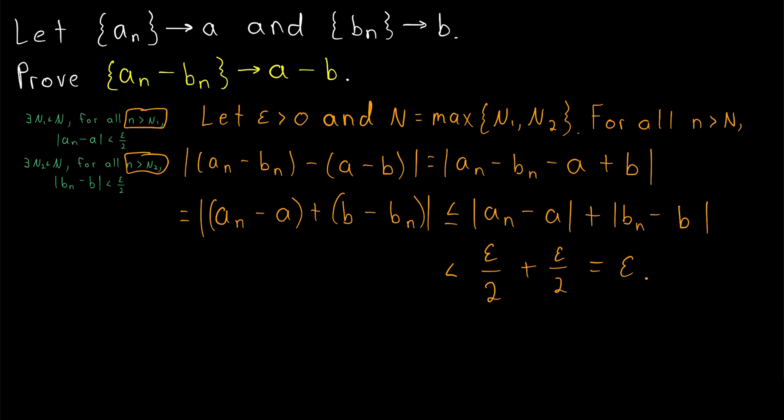Thus, if an is a sequence converging to a and bn is a sequence converging to b, the sequence an minus bn converges to a minus b. The difference of convergent sequences converges to the difference of the limits of those sequences.